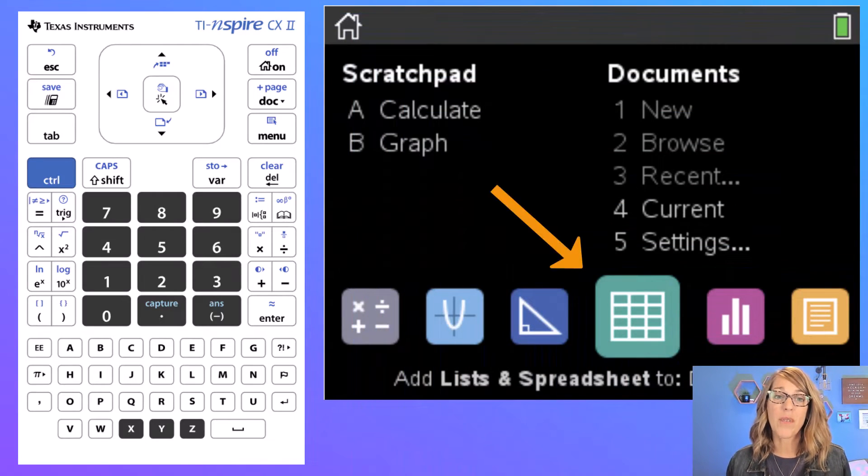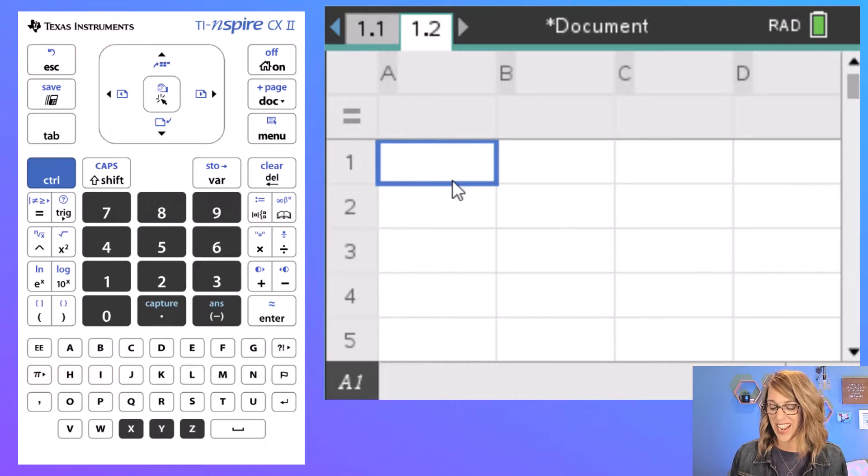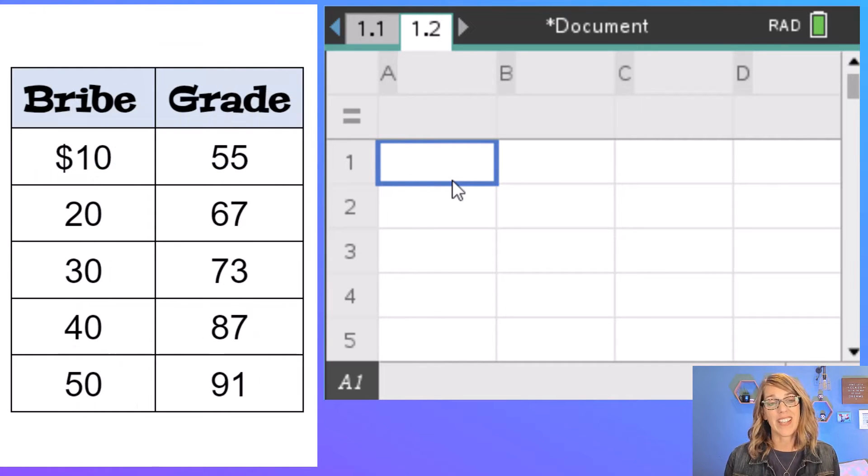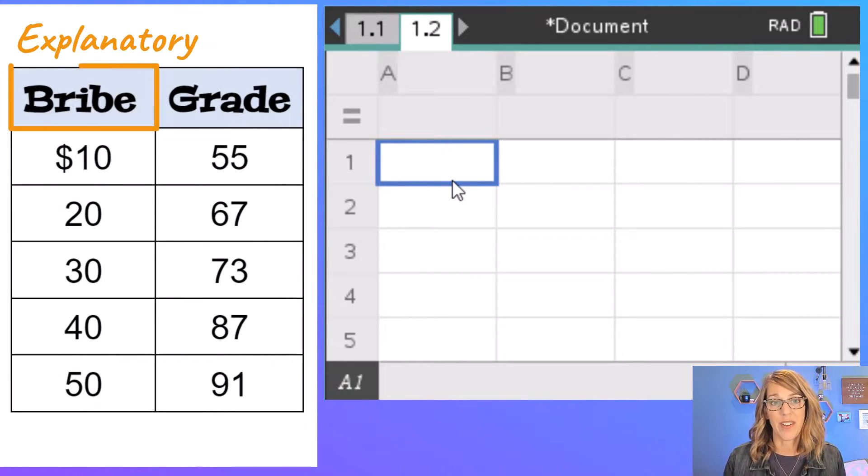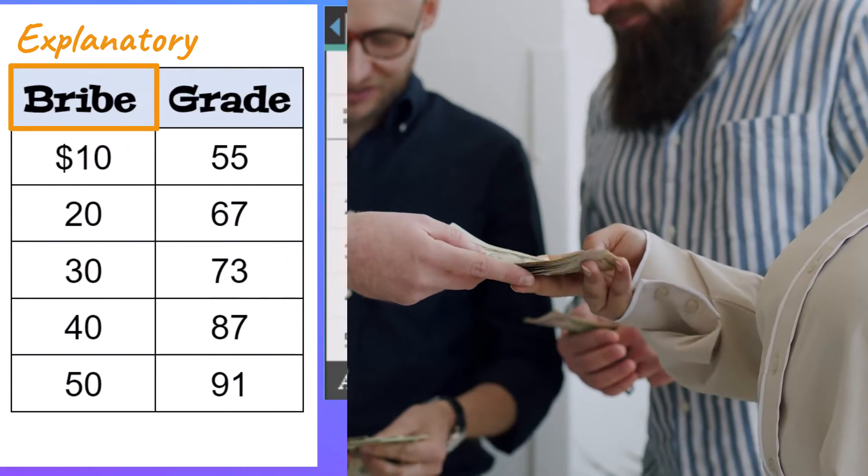From the home screen you want to navigate to the lists and spreadsheet icon. We're going to click on that, and we need to give both of our lists a name. In my data here I've got my explanatory variable which is the bribe. So these are bribes that students give me, hopefully in cash, for their grade.